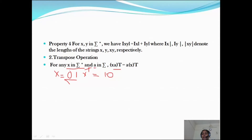Next, there is an identity: x is in sigma-star, meaning x can contain epsilon. But the next string must not contain epsilon. Why? Because if both strings are epsilon, then epsilon equals epsilon and there is no need for this identity. So at least one string must have an element — not both strings can be epsilon.